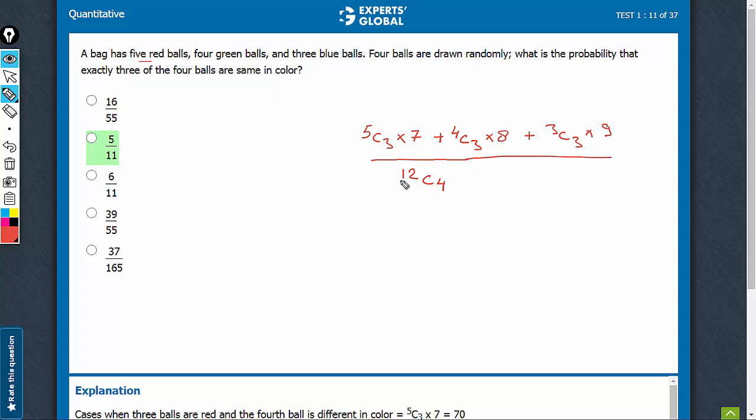Denominator is 12C4. 5C3 is 10, 10 into 7 is 70, 4C3 is 4, 4 into 8 is 32, and 1 into 9, that's 9, upon the value of 12C4, 12 into 11 into 10 into 9, upon 24.